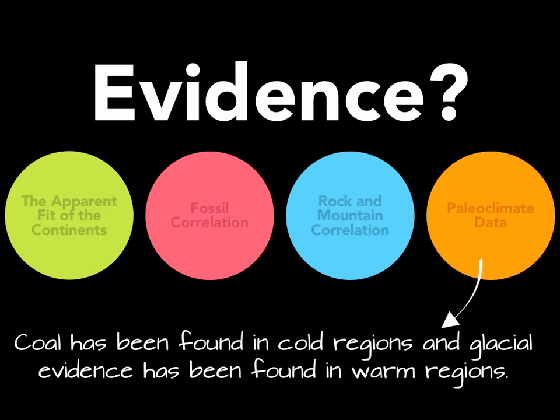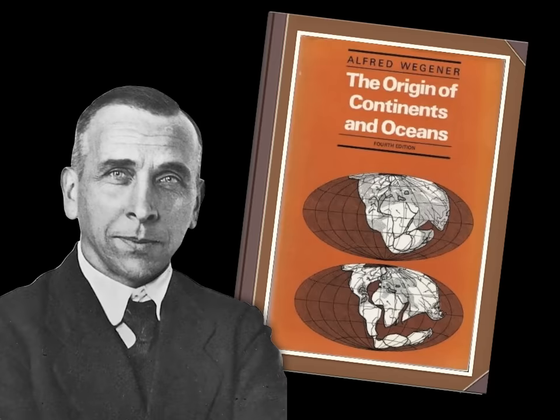With these four pieces of evidence, Wegener published his book, 'The Origin of Continents and Oceans,' in which he laid out his case for continental drift — suggesting that all the continents were once connected in a supercontinent called Pangaea, which existed about 250 million years ago, and have since ripped apart into the present-day land masses that we know so well.